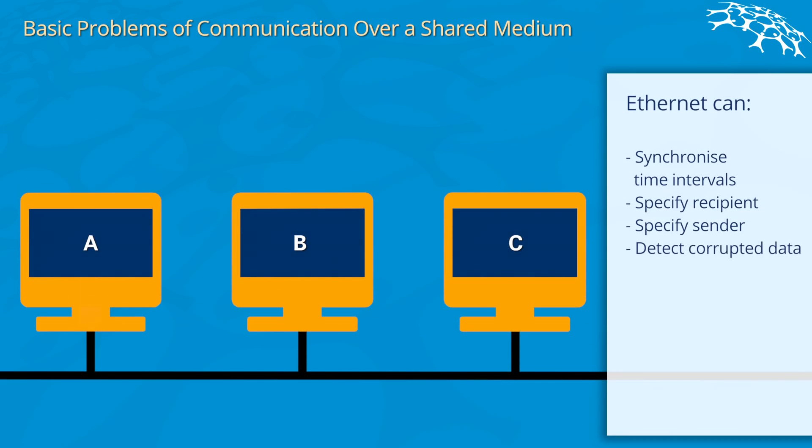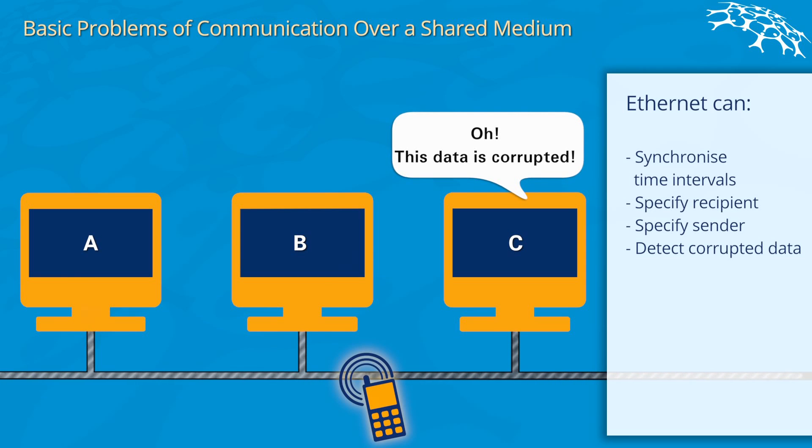Also Ethernet can detect corrupt data. So if data gets sent over the wire and it gets corrupted for some reason, computer C who was supposed to be the recipient knows, oh this data is corrupt.